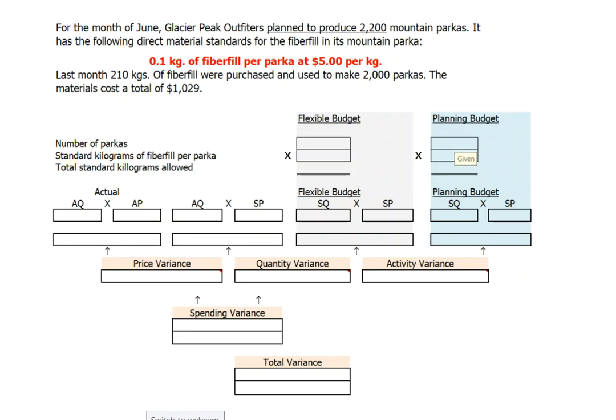In this video, we're going to walk through a short direct material variance problem. For the month of June, Glacier Peak Outfitters had planned to produce 2,200 mountain parkas.